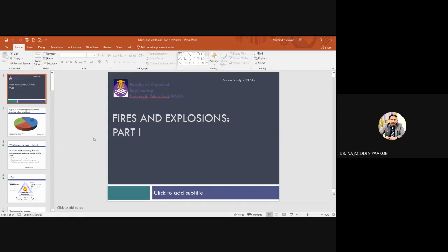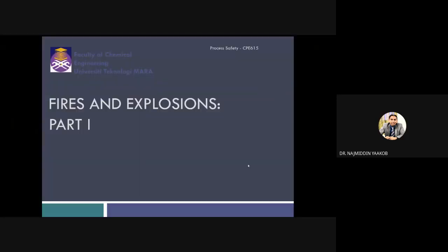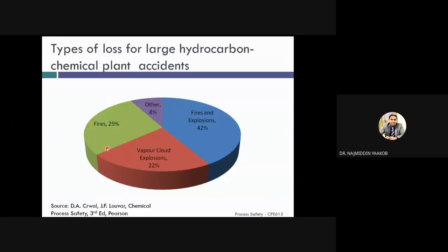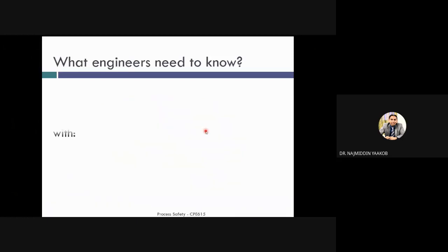Assalamualaikum, today we're going to continue our next sub-chapter in Chapter 5, which is Fire and Explosion Part 1. These are the types of loss for large hydrocarbon chemical plant accidents. As you can see, 29% are contributed from fires, which is second, and fires and explosions contribute the highest, which is 42%.